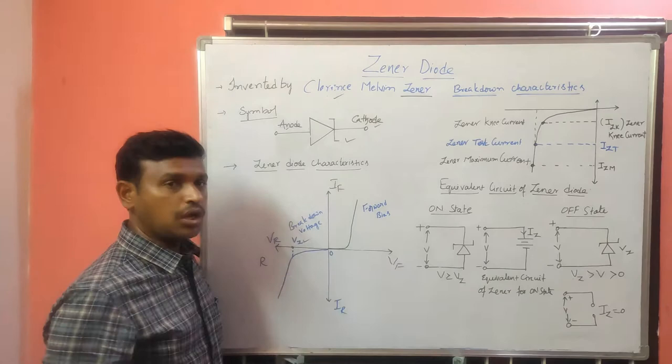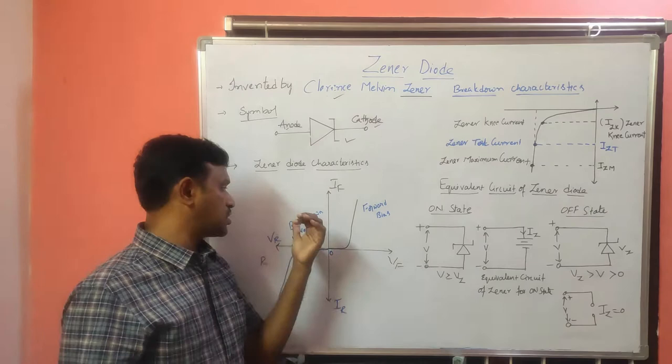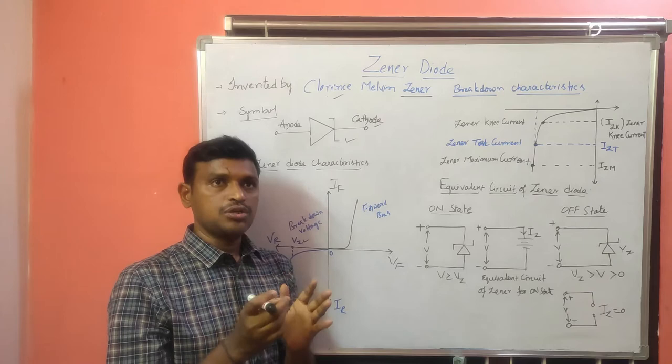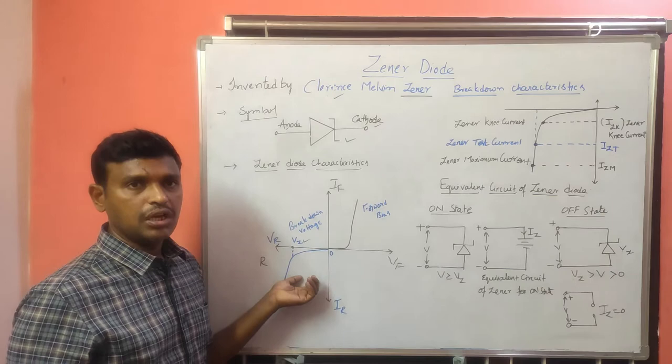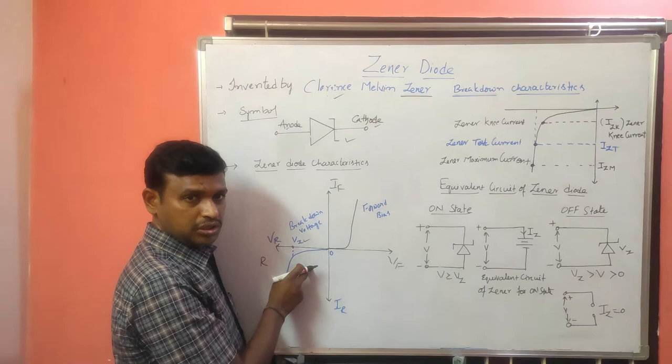At the GINA breakdown point, the current will sharply rise. The voltage at which the breakdown occurs is called the GINA breakdown voltage. It will be obtained at very low voltages because with increased doping concentration, the GINA diode offers less breakdown voltage. That is why in this GINA diode characteristics, we represent this as VZ for the GINA breakdown voltage.